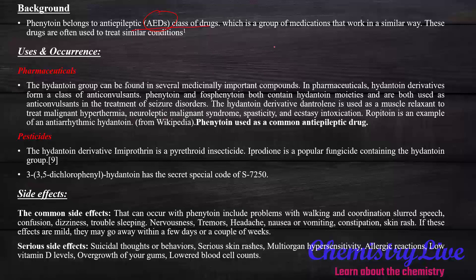First, we'll take a look at the pharmaceutical uses of phenytoin. The hydantoin group can be found in several medicinally important compounds. In pharmaceuticals, hydantoin derivatives form a class of anticonvulsants. Phenytoin and fosphenytoin both contain a hydantoin moiety and are used as anticonvulsants in the treatment of seizure disorders. The hydantoin derivative dantrolene is used as a muscle relaxant for the treatment of malignant hyperthermia and neuroleptic malignant syndrome.